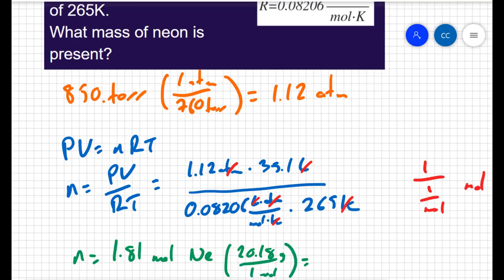So when I plug that in, I get the number of moles as 1.81 moles of neon gas. But the question wasn't asking for the moles of neon gas.